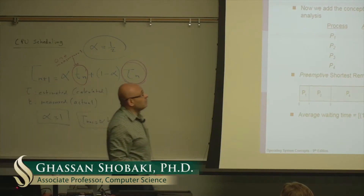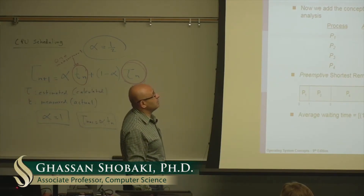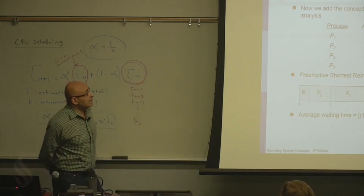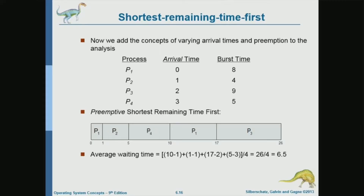Another form of shortest job first is the Shortest Remaining Time First algorithm. This algorithm is more dynamic and more adaptive than shortest job first. In this case, we look at the time remaining for each process. Of course, it's based on our estimate — time remaining indicates the future, and we don't know the future, but we make an educated guess.